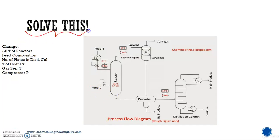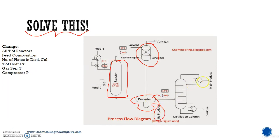Imagine we have to solve this: a chemical plant with a reactor, a scrubber, a decanter which separates liquid from other solids or a byproduct, and a distillation column. Let's say we have all the temperatures, feed composition, and number of plates — we have everything to calculate the process — and suddenly we have a change in pressure.